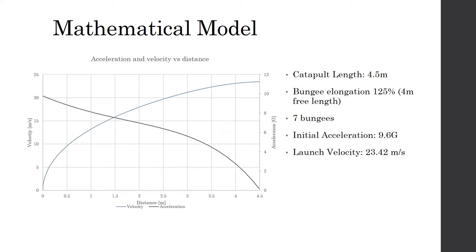Using the mathematical model, the velocity and acceleration profiles of the UAV along the length of the catapult can now be plotted. The blue curve represents the velocity profile and the grey curve represents the acceleration profile.